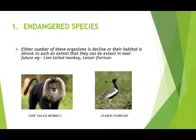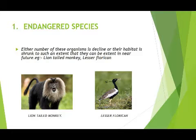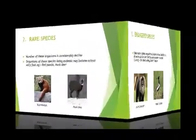Endangered species is a type of organism that is threatened by extinction. These organisms are reducing due to loss of habitat and loss of genetic variation. If these animals are not conserved, they will become extinct. Examples include the lion-tailed monkey and the lesser florican, a bird found in the Nepal region.